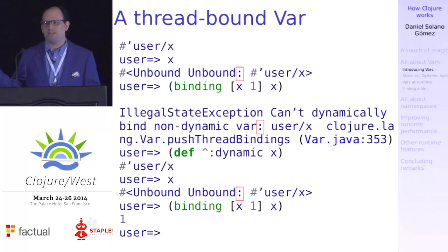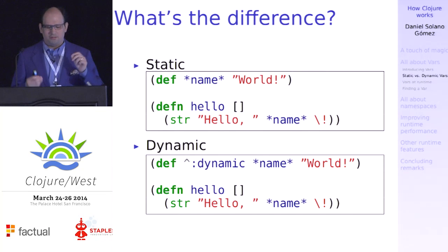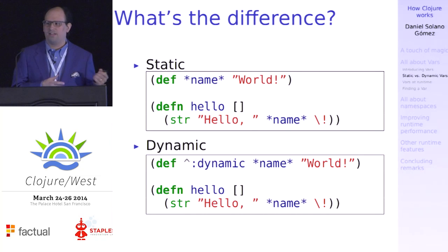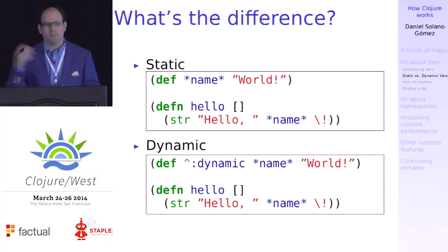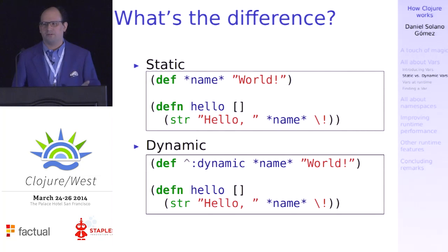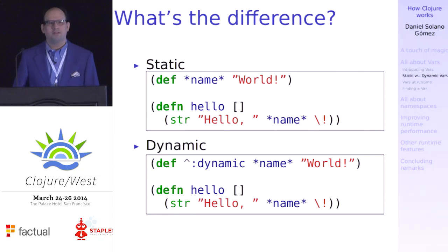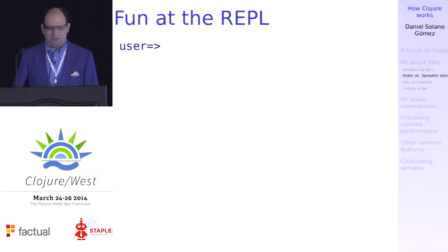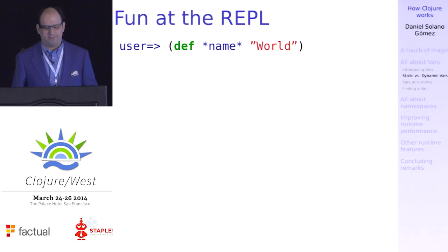Any guesses of why this change happened? There's a difference in when you have to get a thread-local value versus getting just the root value or root binding of the VAR. Here we have two programs that are more or less the same, with the exception of adding the `dynamic` tag to the second VAR. And if we try this on the REPL, we can see how Clojure behaves differently.